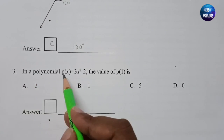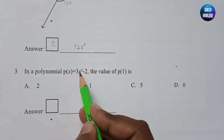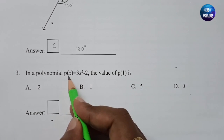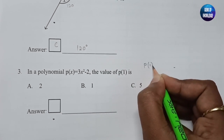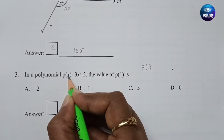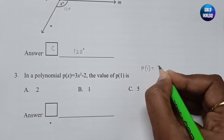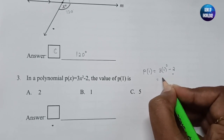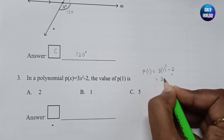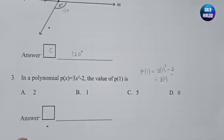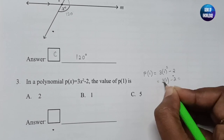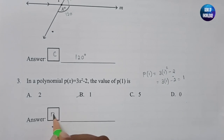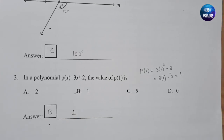Third question: for polynomial p(x) = 3x² − 2, find the value of p(1). Substituting x = 1: p(1) = 3×1² − 2 = 3×1 − 2 = 3 − 2 = 1. The answer is B: 1.